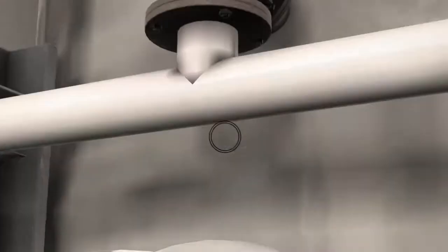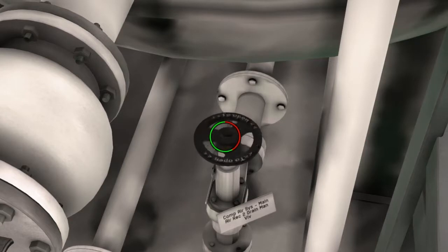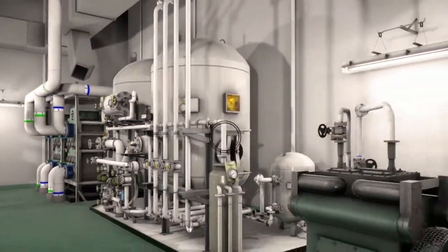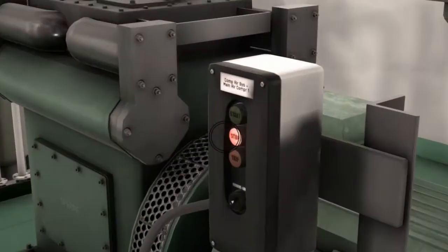To ensure that there are no contaminants in the tank, open the drain valve located at the bottom of the tank. When everything is ready, before starting the compressor ensure that there are no trip indications. If there are, reset it before starting the compressor.